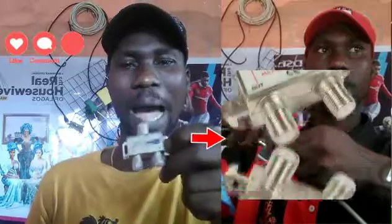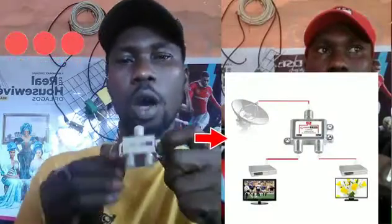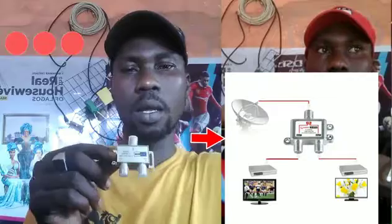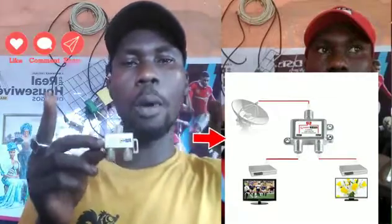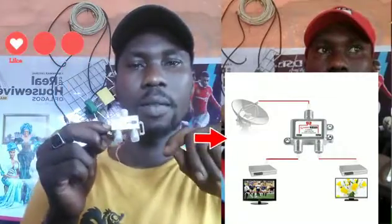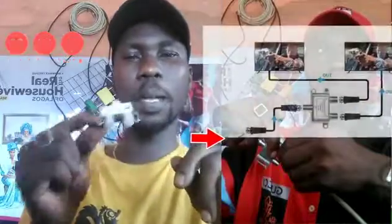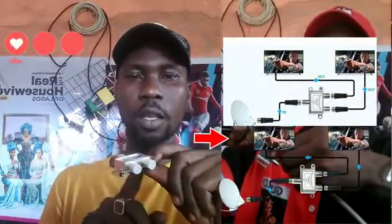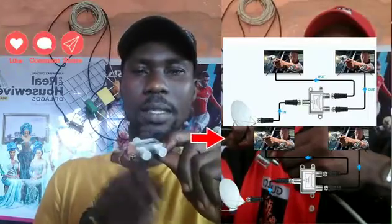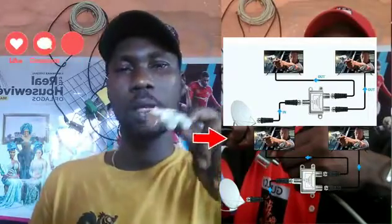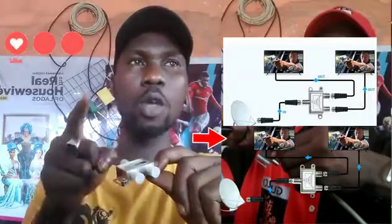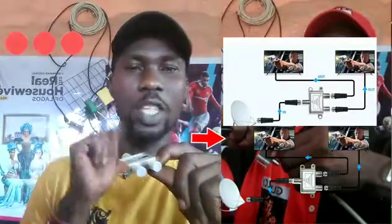While this signal splitter enables you to split out the signal of a satellite to two or more channels. For example, you can split out the signal of your DSTV or your DStv through this signal splitter to other TV sets or decoders, depending on where the signal is coming from.